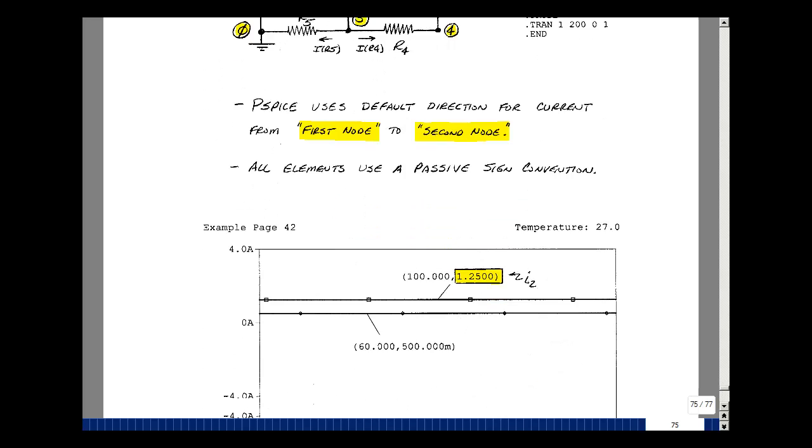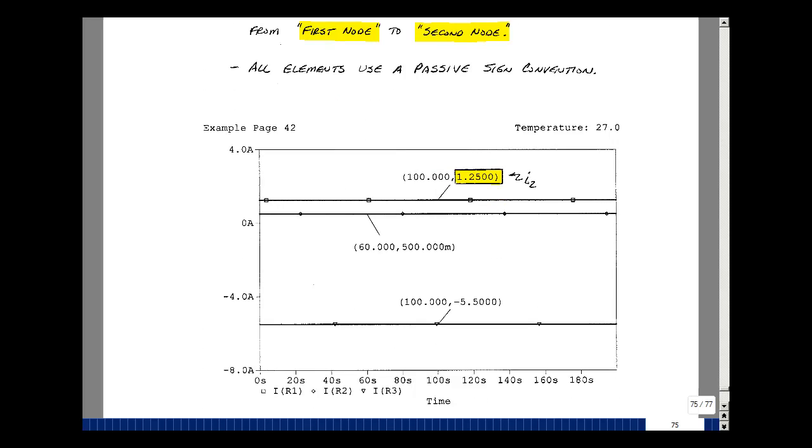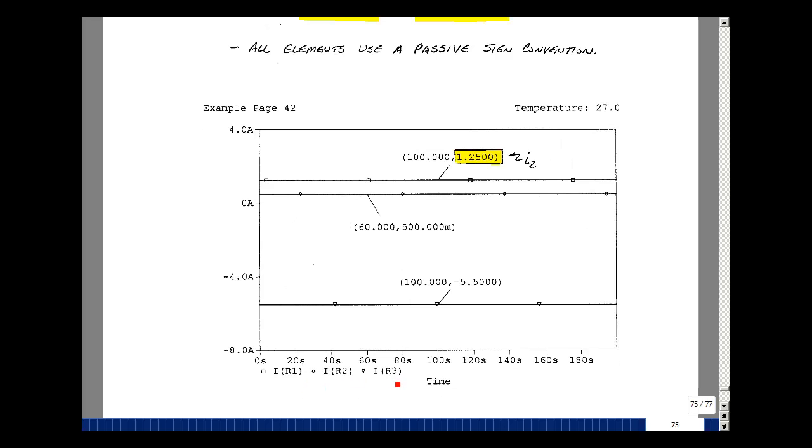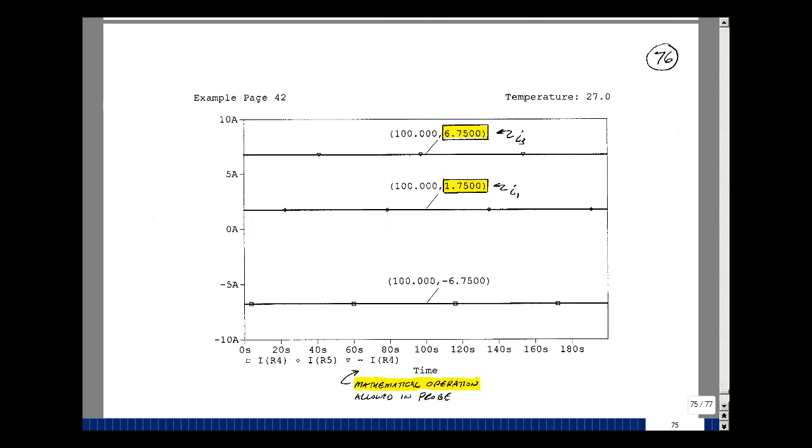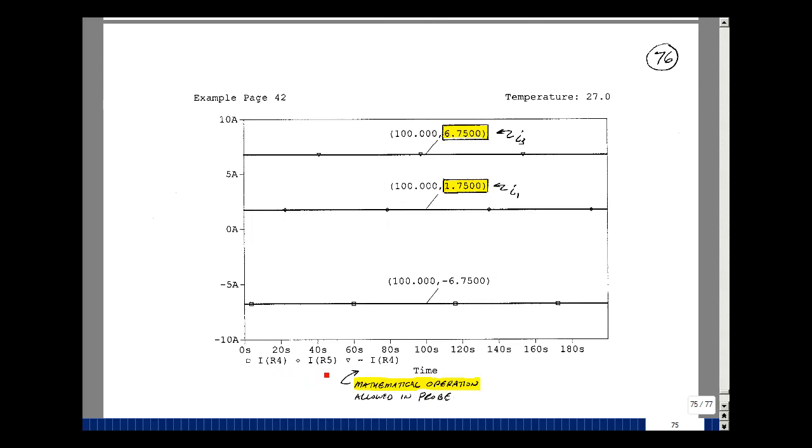Some of those currents are also our mesh currents. Here is a graphing of the current in resistor R1, R2, and R3. I did this notation in probe. This particular value was the value of one of our mesh currents. I did this on two graphs so it wouldn't be too crowded. I plotted I of R4 and I of R5. The mesh current I3 is a negative of the current in resistor R4. In probe, you can do mathematical operations, so you could put a minus I of R4, which was 6.75 amps.